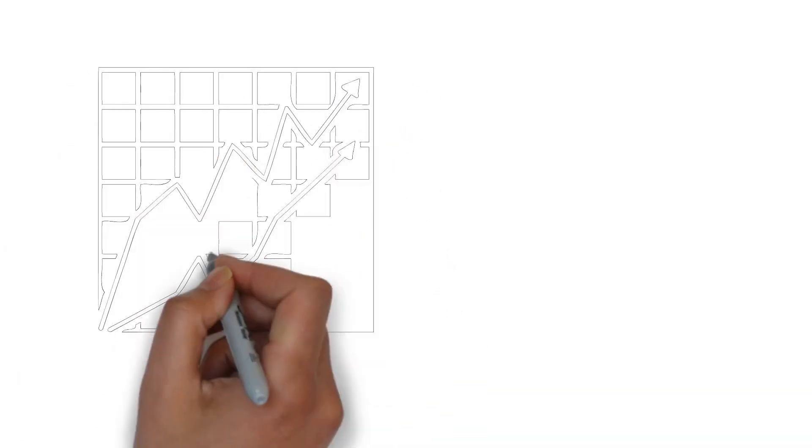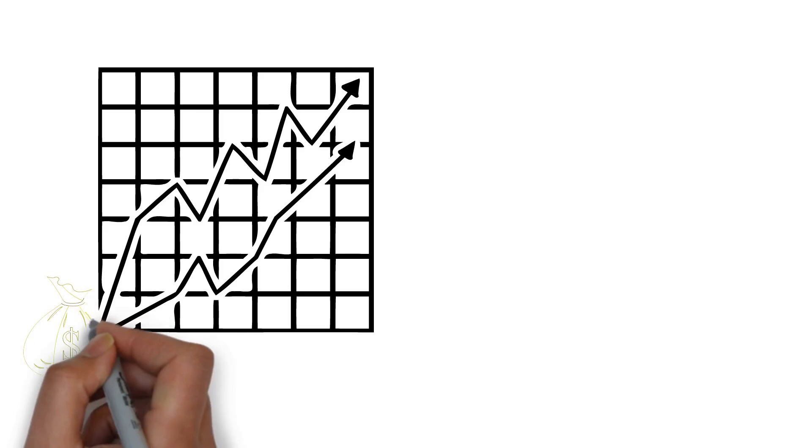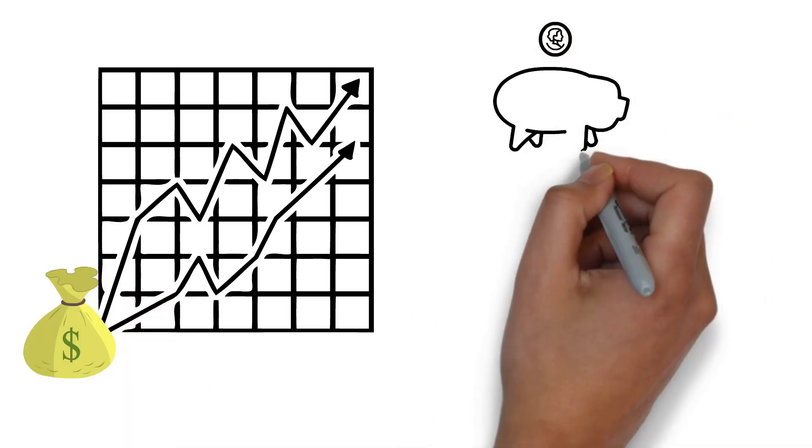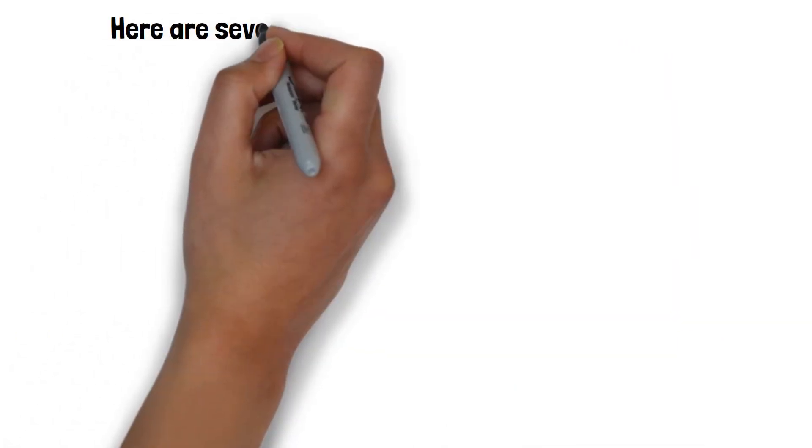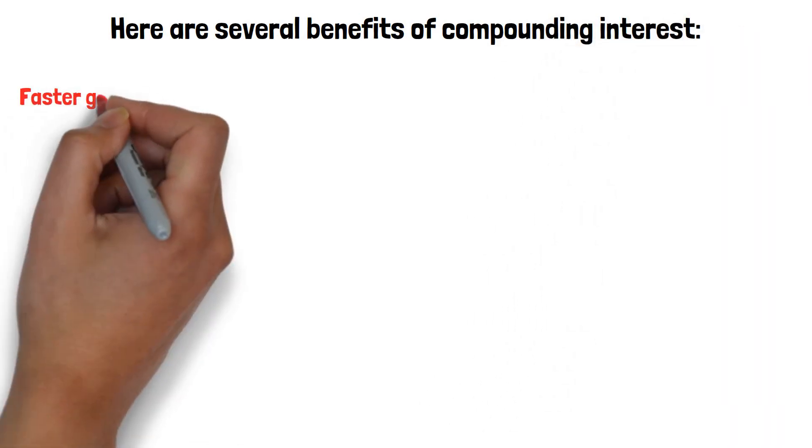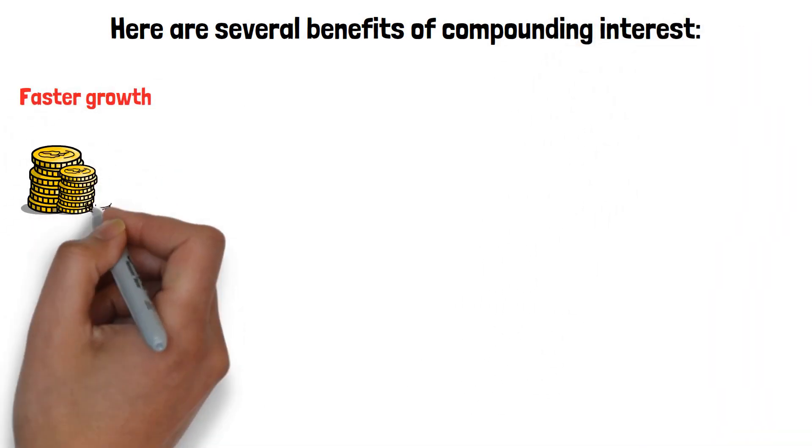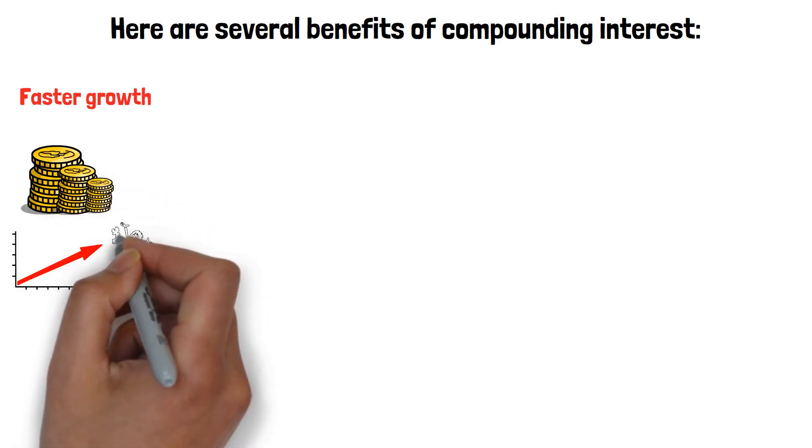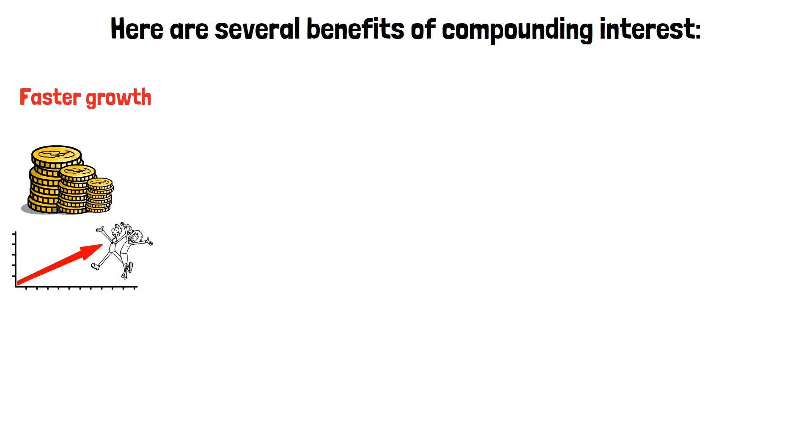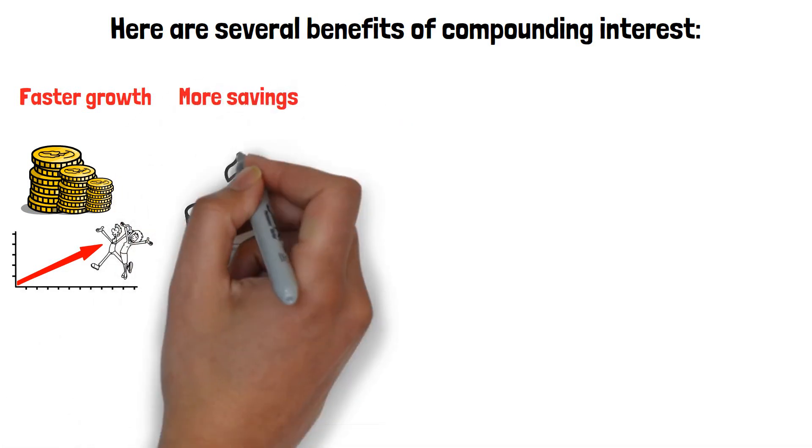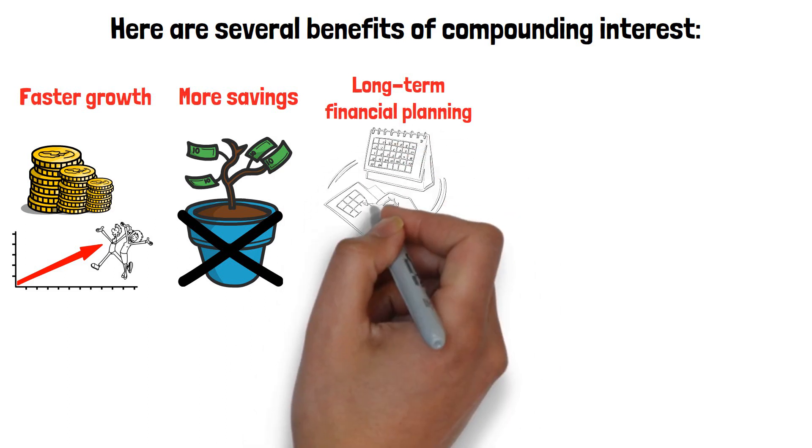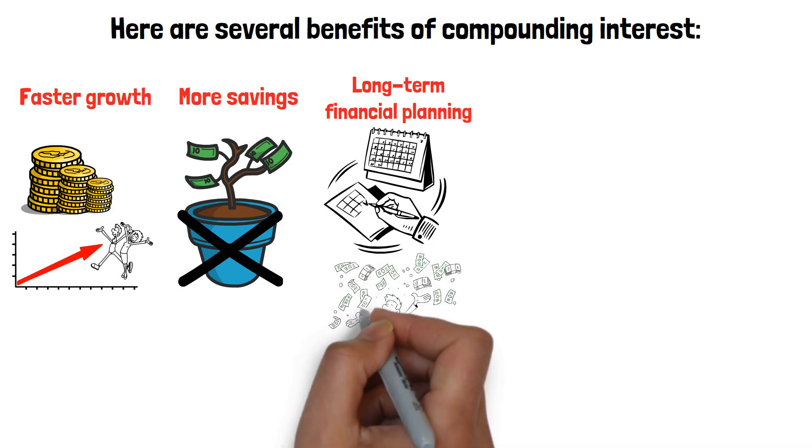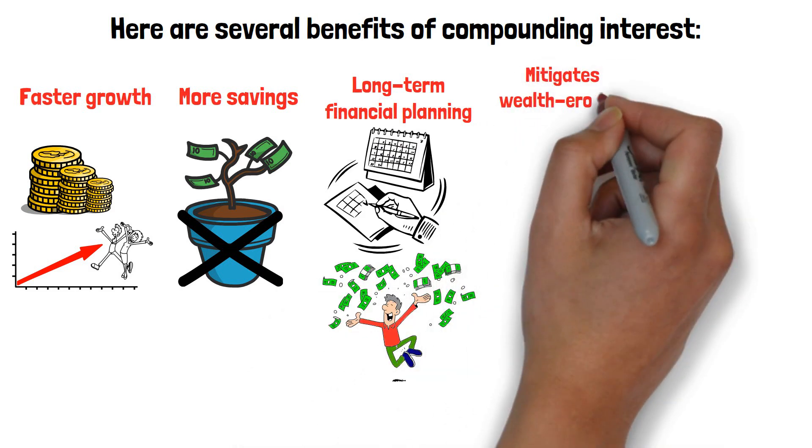Compound interest allows your money to grow faster than simple interest because you earn returns on both the money you invest and the returns at the end of each compounding period. This means you won't need to save as much money to meet your financial goals. Here are several benefits of compounding interest. Faster growth - because you earn returns on the money you invest and returns at the end of each compounding period, compound interest allows your money to grow faster than simple interest. More savings - you don't have to save as much money to meet your financial goals if you earn interest on your interest.